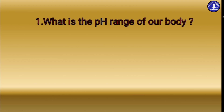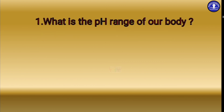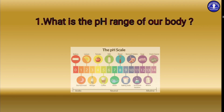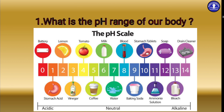Before that, let's see what is the full form of pH. pH means Potential of Hydrogen or Power of Hydrogen. It is a scale used to specify the acidity or basicity of an aqueous solution. The pH scale contains 14 numbers where 7 is called neutral. If we go from 7 to 0, it is acidic.